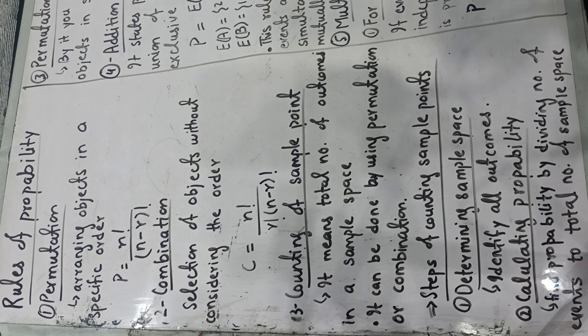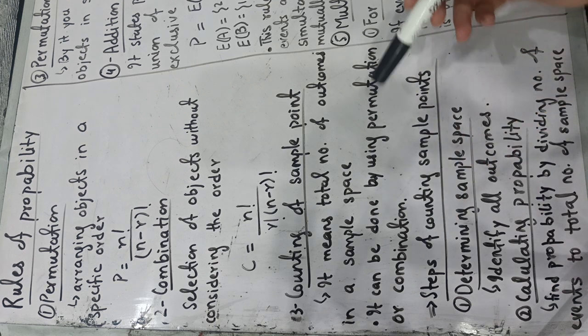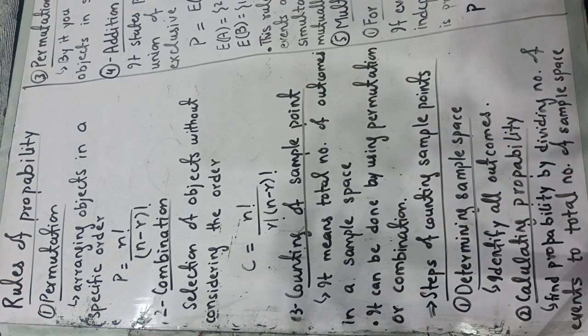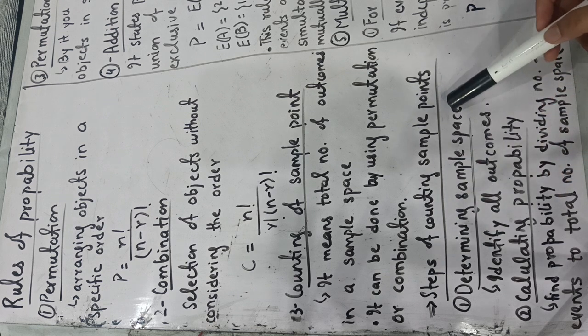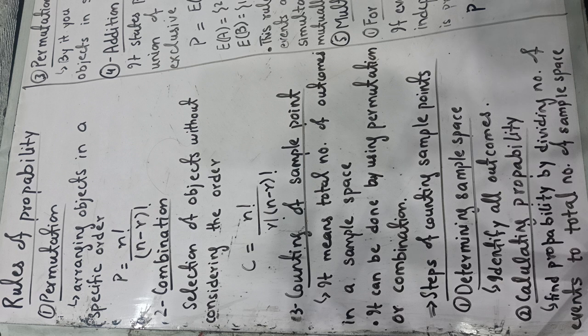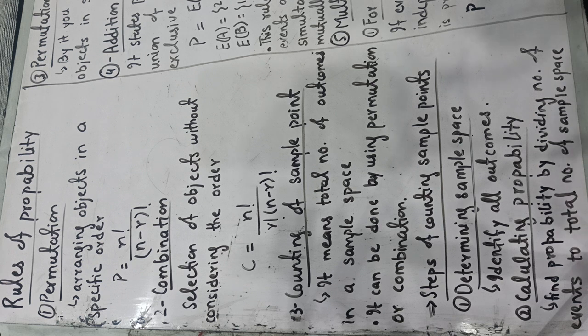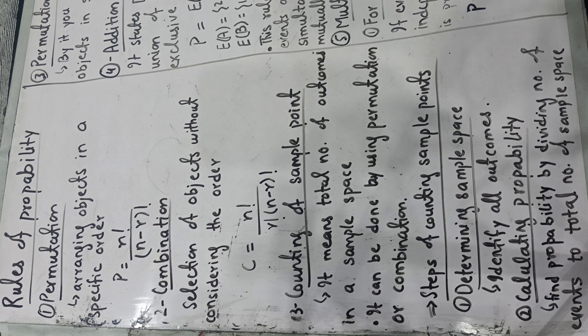What is the total number of outcomes and possibilities and how to count them? It can be done by using permutation and combination. We can count them. First you will determine the sample space. You have to identify how many outcomes and possibilities. Then you will calculate the probability by dividing the number of events by the total number of sample space, as I told you yesterday.